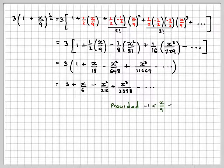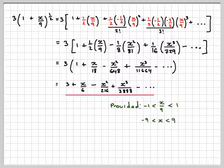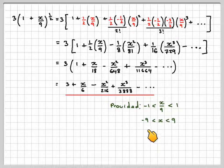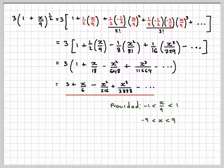Now, this is provided that x over 9 is between minus 1 and 1, which means that x would have to be between minus 9 and 9, so this is our final answer, and this is where it will converge.